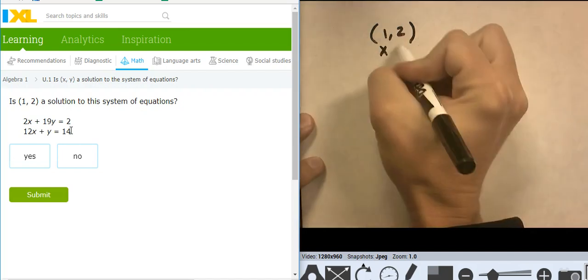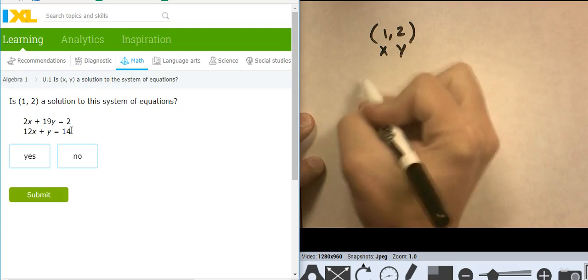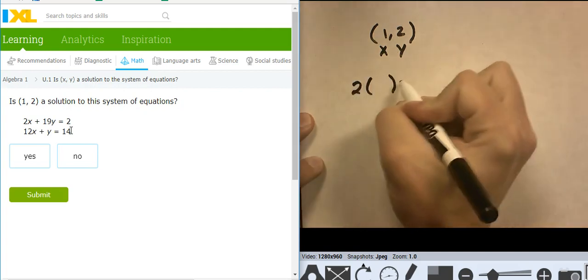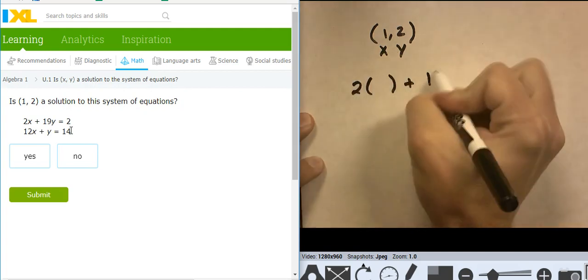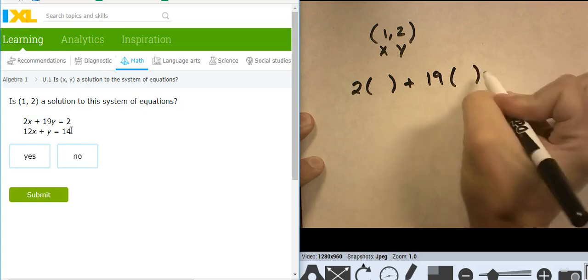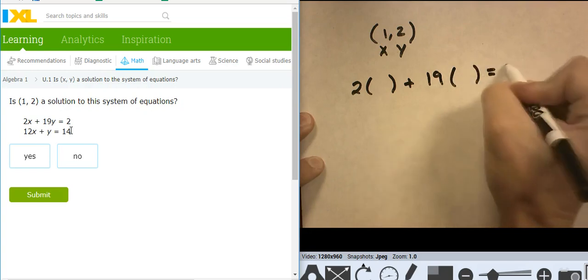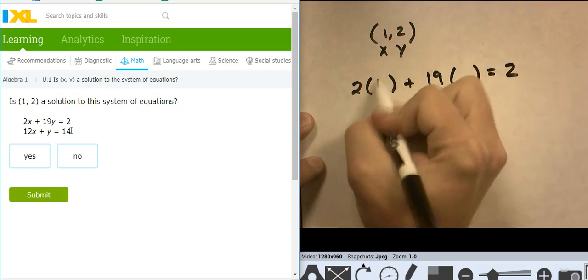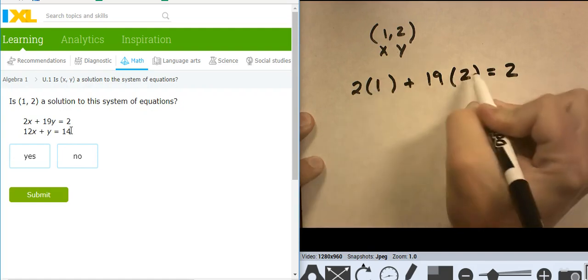So I have x and y, and I'm going to plug it in to 2x plus 19y equals 2. So I'm going to put the x right here, I'm going to put the y right there, I'm going to see if this works.